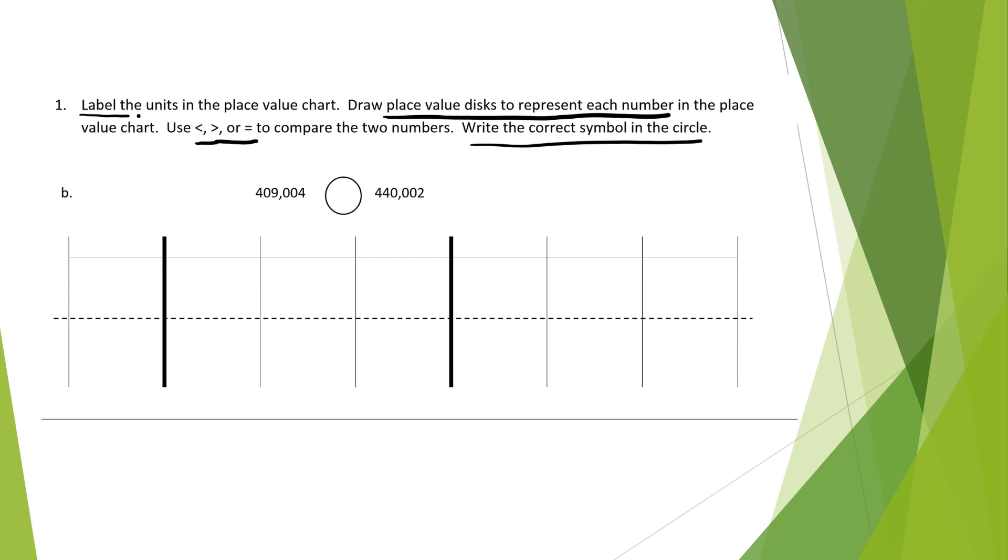So we have 409,004 compared to 440,002. The first thing we had to do was label the units. So we practiced doing shorthand in class. So I can do ones, tens, hundreds, thousands, ten thousands, hundred thousands, and millions. Quick way to do that.